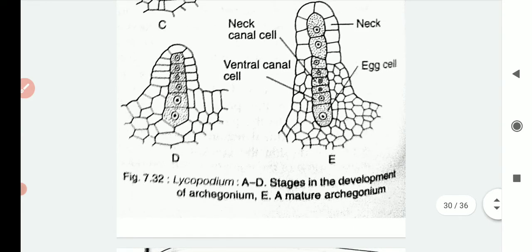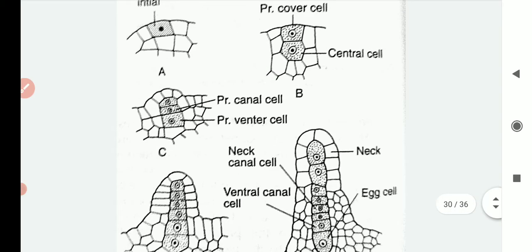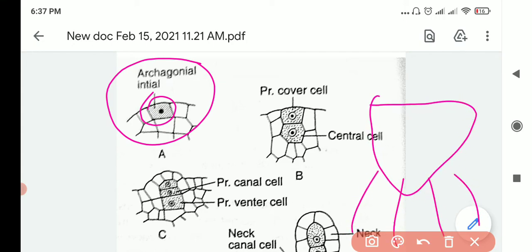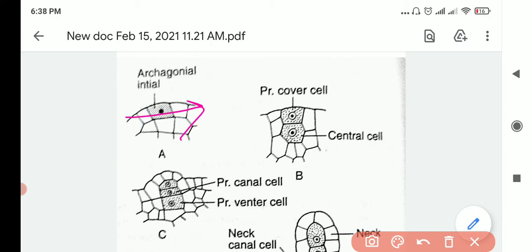When you look at the stages in the development of the archegonium, we will see that there is an archegonial initial. Again, from this gametophyte, one cell from the surface will behave as the archegonial initial. Then it will divide periclinally and we will have a primary cover cell and a central cell.